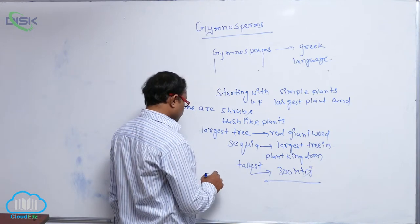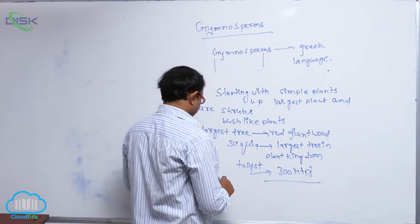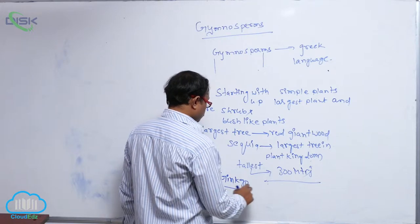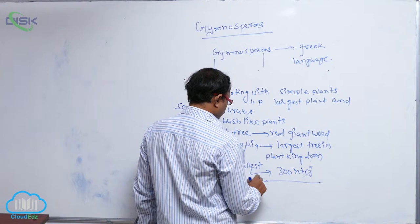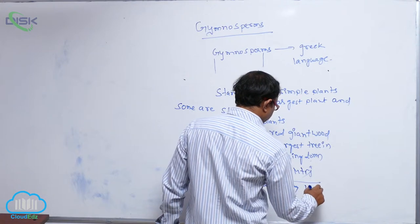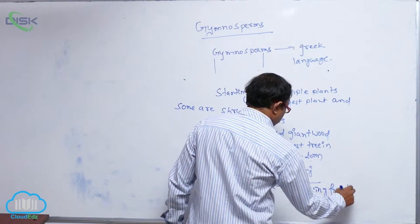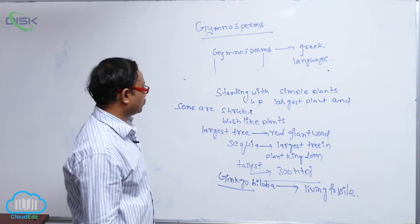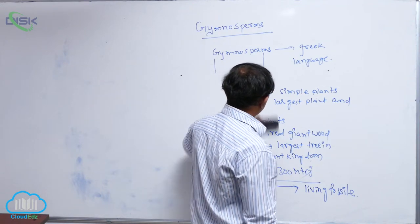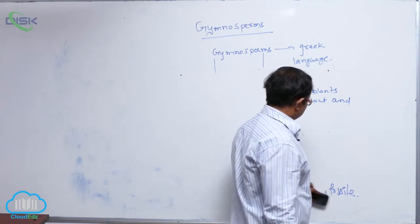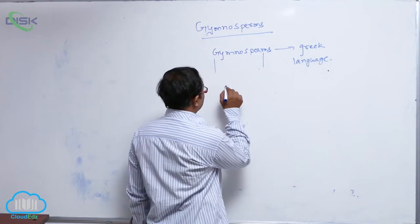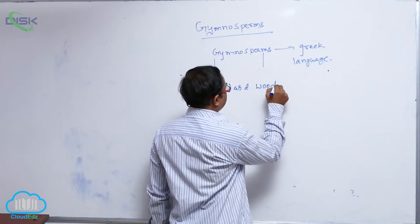Some Gymnosperms are living fossils — for example, Ginkgo biloba (G is silent). Gymnosperms can have branched or unbranched stems, and most of the plants are hard woody trees.